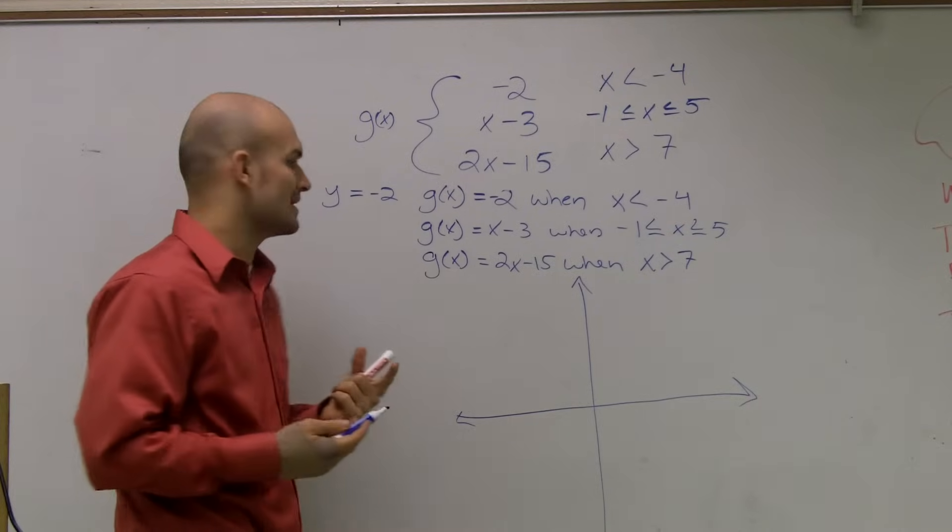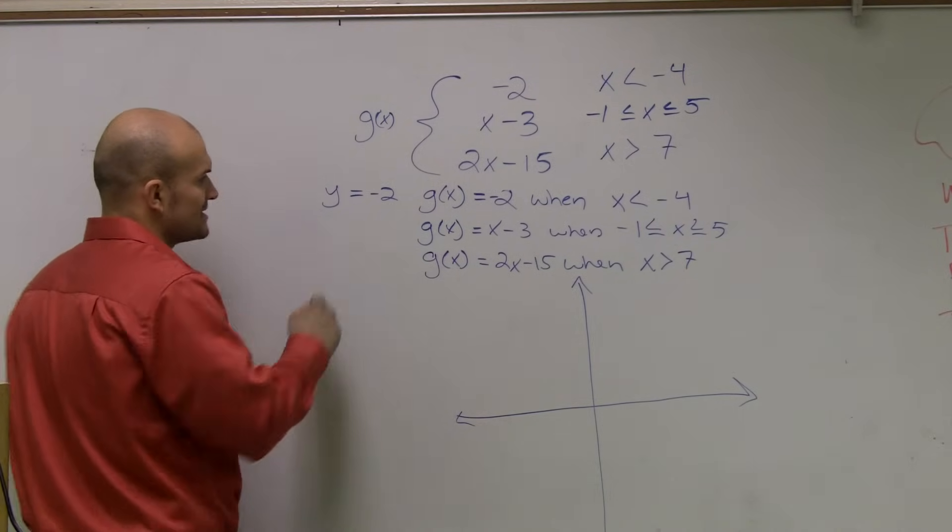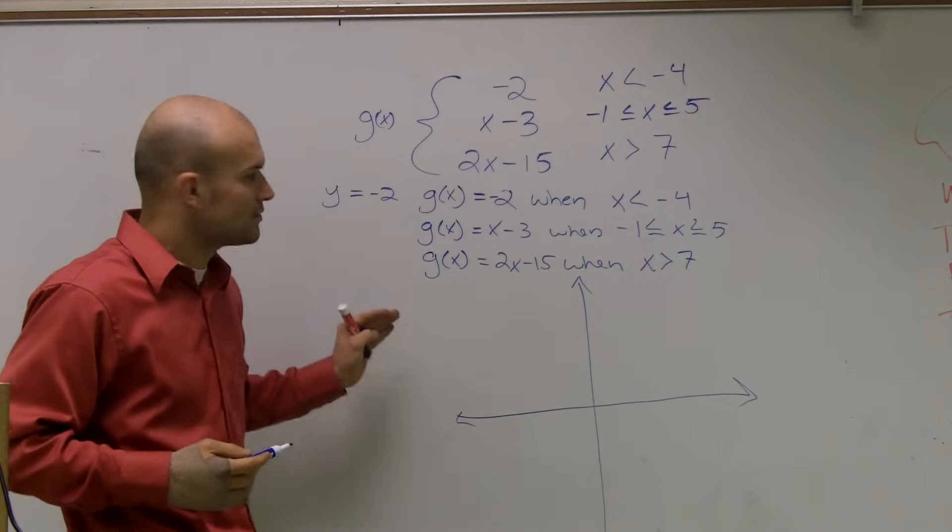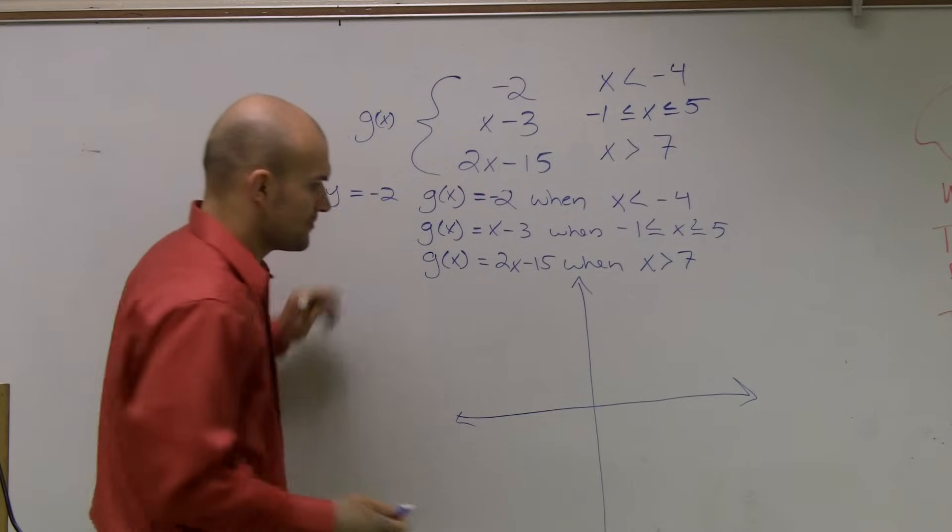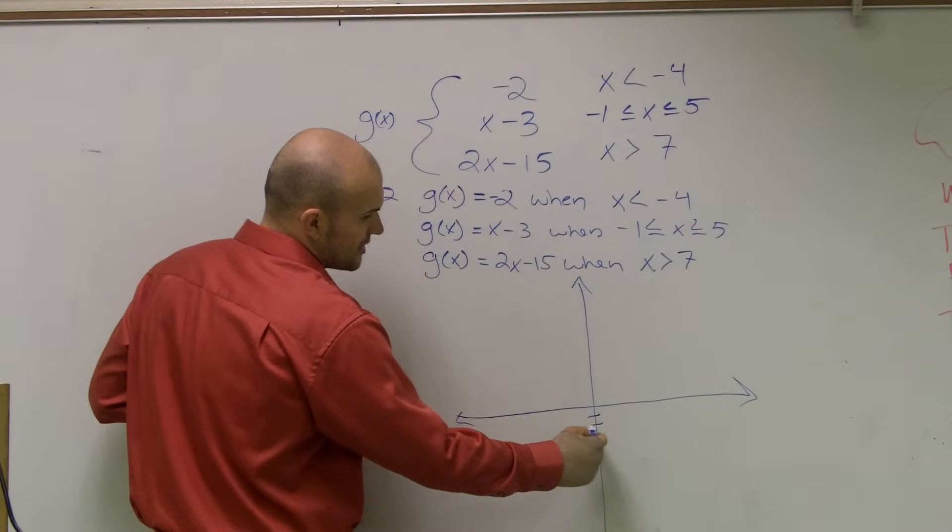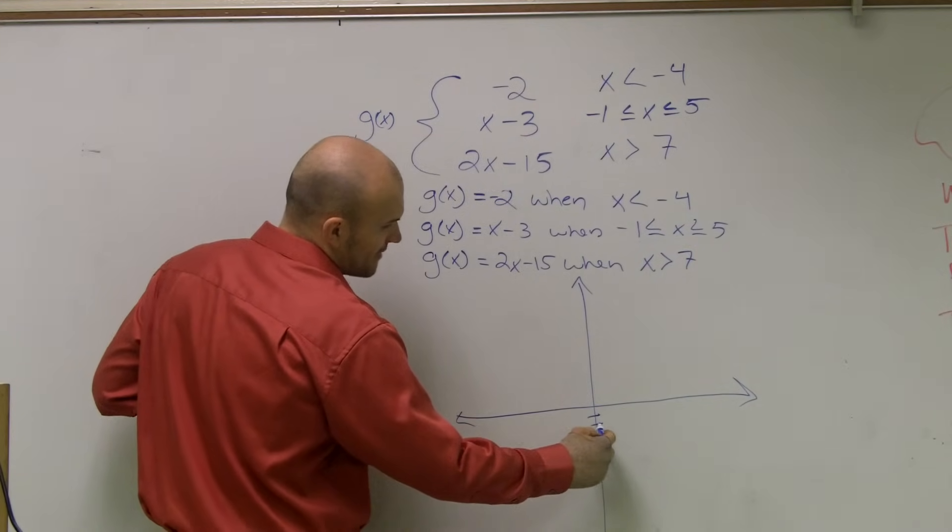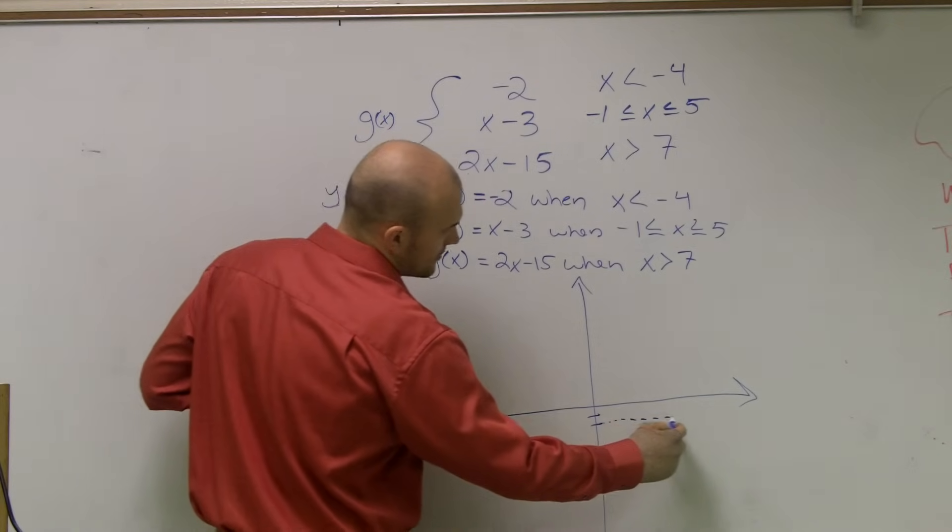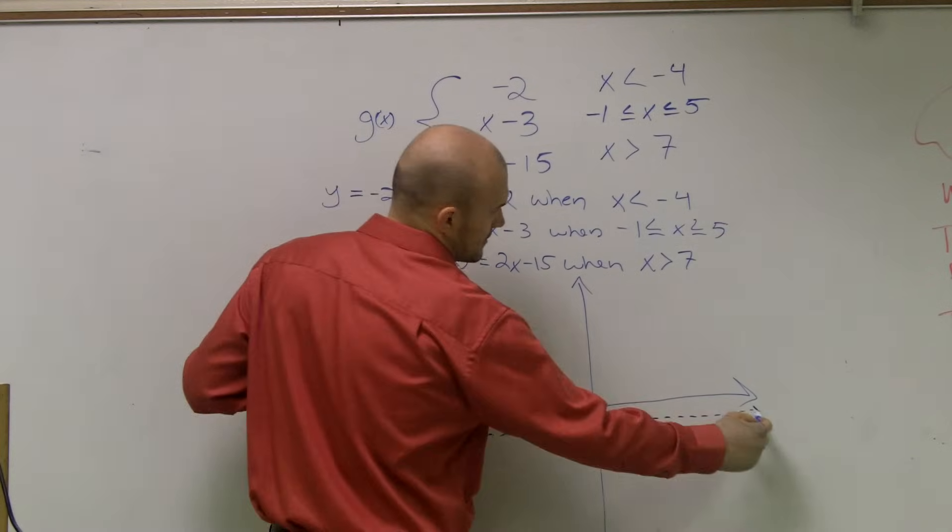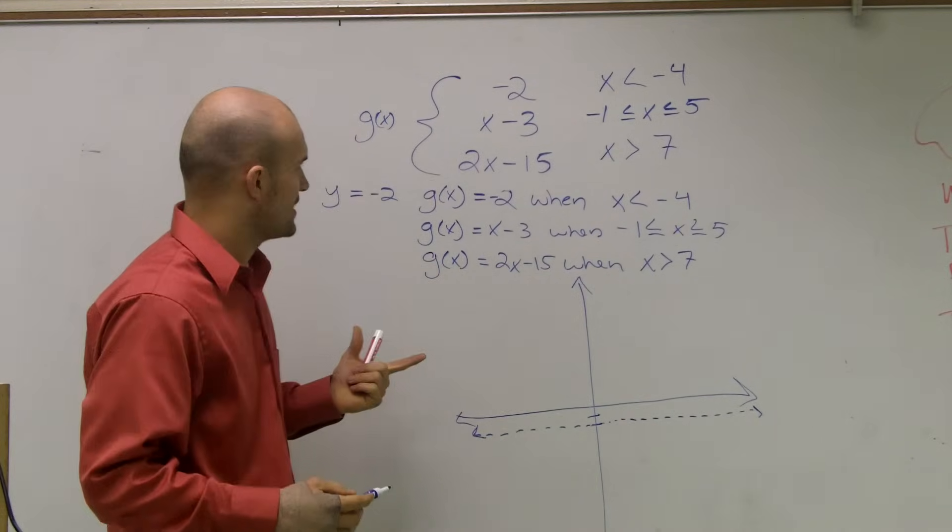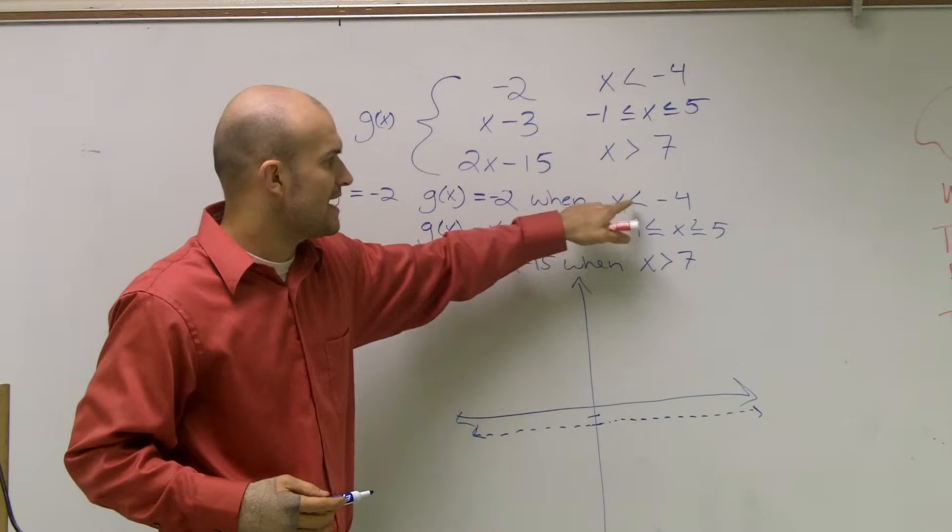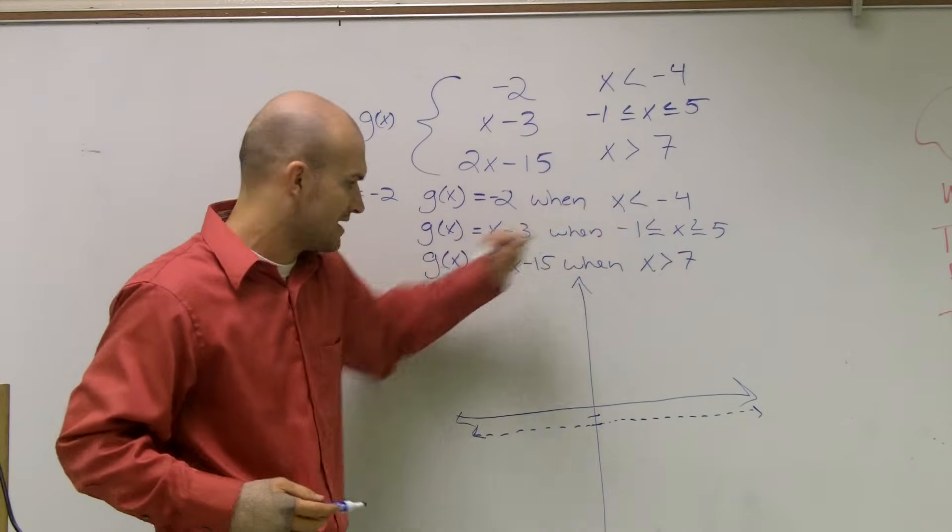If you're to graph that on an x and y plane, it doesn't matter what your x value is. y is always going to equal negative 2. So it doesn't matter what x value I pick, y always equals a negative 2. So really, that graph is going to look, it's just going to be a horizontal line at negative 2. Then the next thing I need to look at is that says this graph is only true when my values of x are less than negative 4.